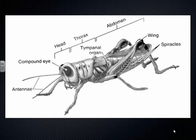One additional organ is the tympanic organ, which is the area used for hearing, and it is located on the thorax. You can see it when you look at the grasshoppers.